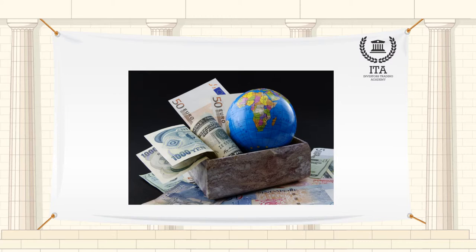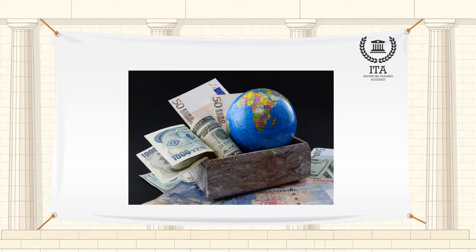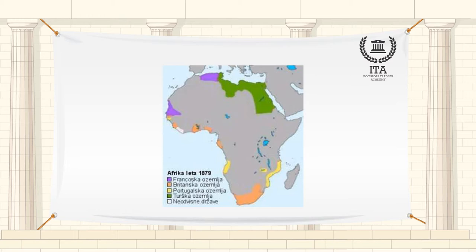Developing nations are commonly referred to as third world. These developing countries can be found in Asia, Africa, Oceania, and Latin America. These countries were at one point colonies which were formerly led by imperialism. The end of imperialism forced these colonies to survive on their own.